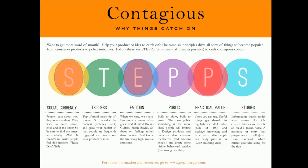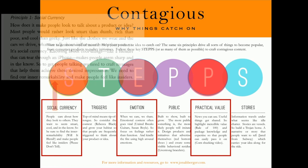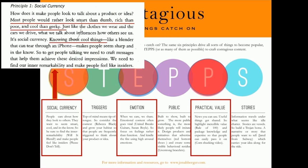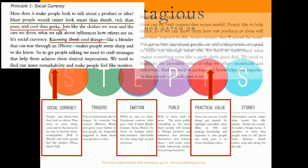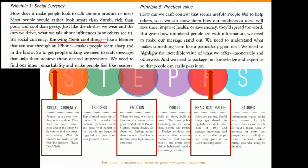By working with Berger's STEPPS framework from 2013, Media Geek has successfully used three principles: social currency, emotion, and practical value. For social currency, Media Geek has introductory content that teaches audiences to understand specific Hollywood film knowledge, such as the 180-degree rule, which corresponds to Berger's words that people want to look smart, rich and cool by knowing cool things. In addition, I added a link about more Hollywood knowledge for the audience below the video. For emotion and practical value, this video has summarized and interpreted useful knowledge points for audiences to learn, and therefore it saves time.